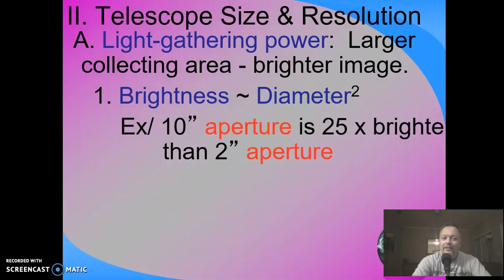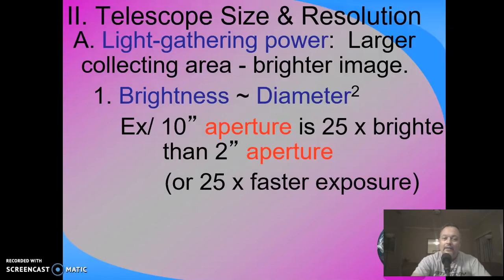So to give you an example, let's say you had a 10-inch scope versus a 2-inch scope. Here's how the math works. If you want to compare two telescopes, you basically take the two numbers and divide them. In this case, 10-inch divided by 2-inch, you get 5, and then you square it. So a 10-inch scope is going to give you a 25 times brighter image than a 2-inch scope. So divide and square. The math is very easy.